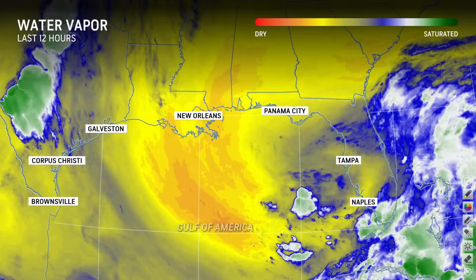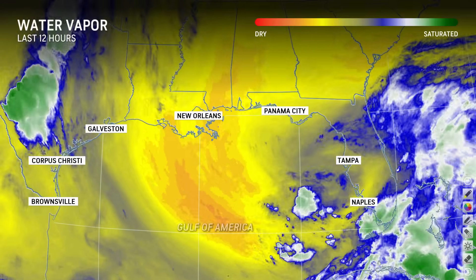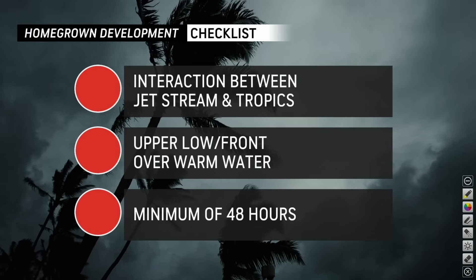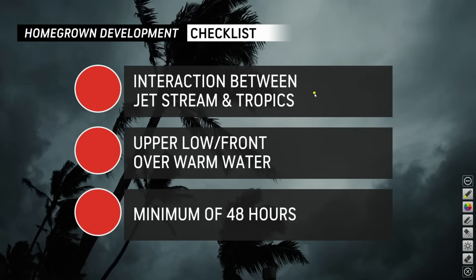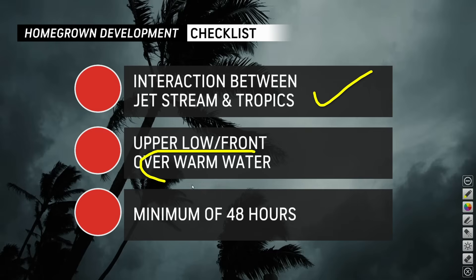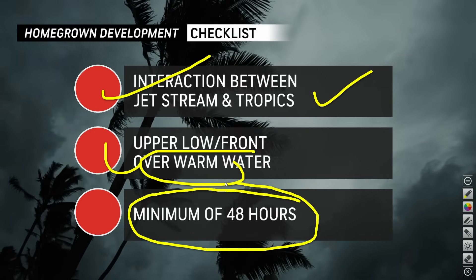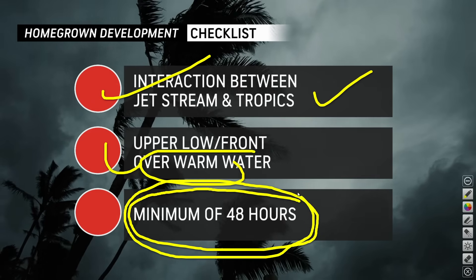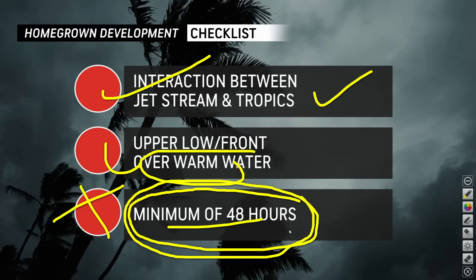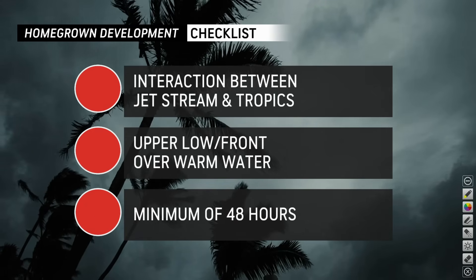This upper low has to sit here for a minimum of 48 hours in order to get development. I have a checklist for homegrown development: the interaction between the jet stream and the tropics — we're getting that right now off the Southeast coast. You have an upper low over warm water — I think you can check that box too. What I don't think we'll get is this upper low sitting over the open waters of either the Gulf or the Southeast coast for a minimum of 48 hours to translate into a tropical system.